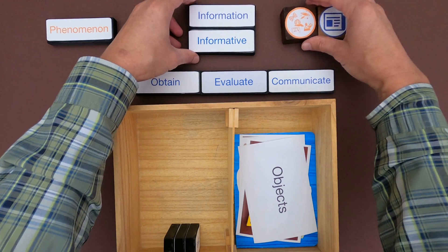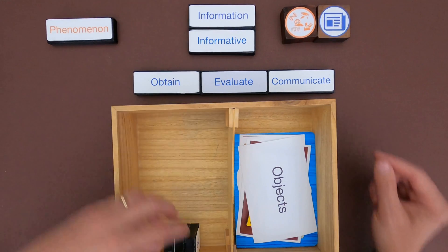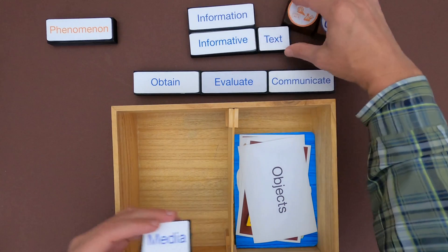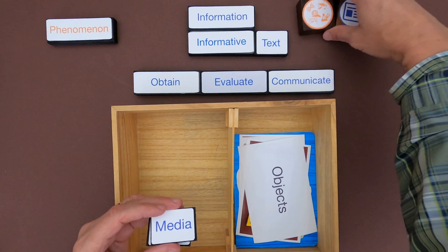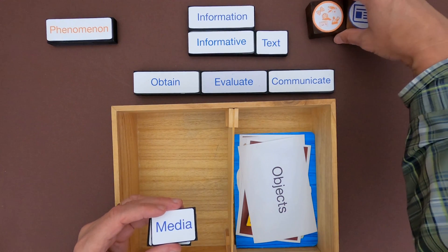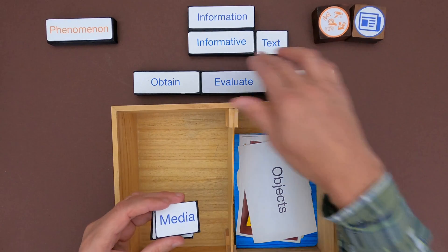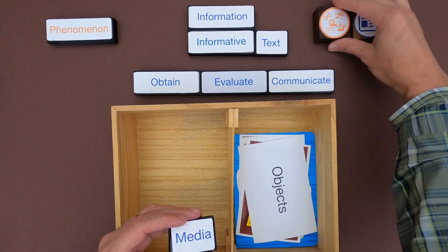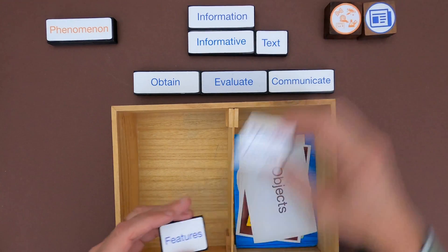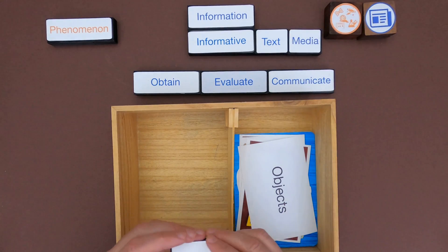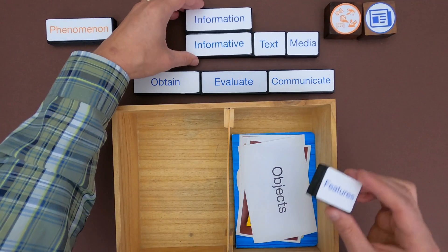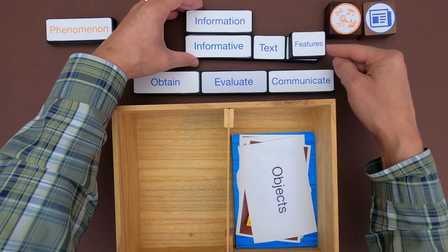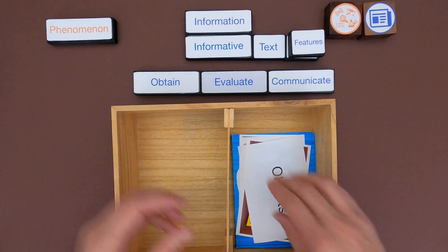The information we'll be dealing with in this video is informative information — it's designed to be given from one person to the receiver. We're going to be looking at what are called informative texts, which are designed to go from whoever writes it to whoever receives it. It could also be media, like video or multimedia. One of the tools we use are called text features or media features to make sense of it.